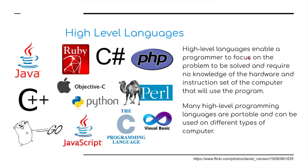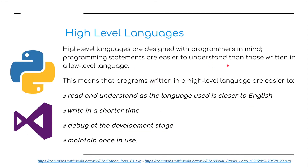High-level languages enable programmers to focus on problems to be solved and require no knowledge of the hardware and instruction sets of the computer. Many high-level programming languages are portable and can be used on different types of computers. For example, if you write a Python program on a MacBook, you can send it to somebody using a Windows machine and they will be able to open, run, and use it. Programming statements are more easy to understand than those written in a low-level language, programs are easier to read as the language is closer to English, they can be written in a shorter amount of time, debugged at the development stage, and maintained once in use.